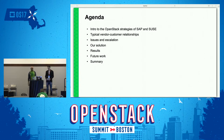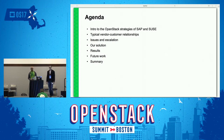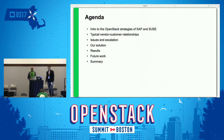Here's a quick agenda: we'll start by setting the scene regarding the OpenStack strategies of the two companies. Then we'll look at what a typical vendor-customer relationship looks like, how that caused some issues for us, and how we felt we needed to go beyond that and develop a new model. We'll cover the new solution, its benefits, what we're planning for the future, and then wrap up.